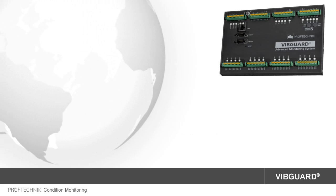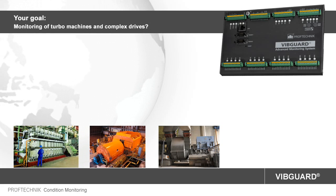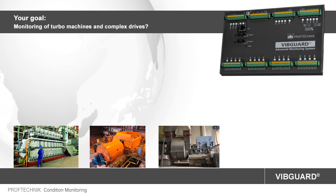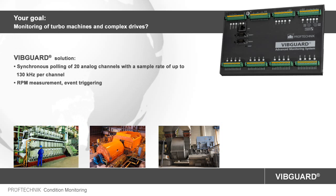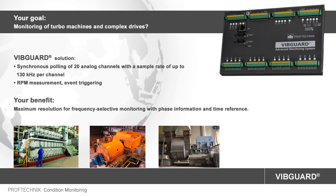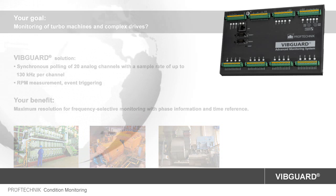Do you require monitoring of high-performance turbo machines or complex drive systems? WIBGARD features 20 channels for high-resolution, frequency-selective information. The measurements can be controlled by defined speed or event triggers and, due to the synchronicity, also include phase-relevant information.